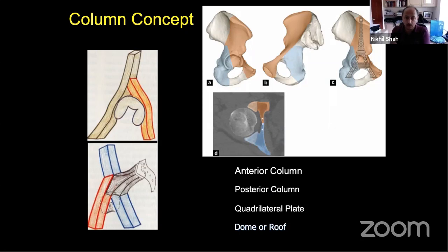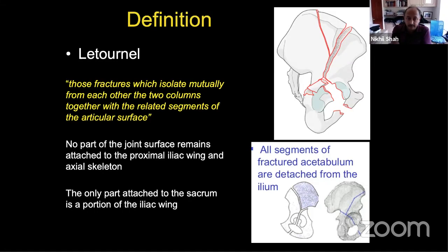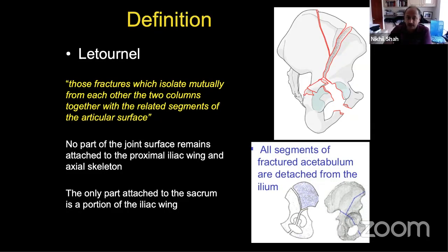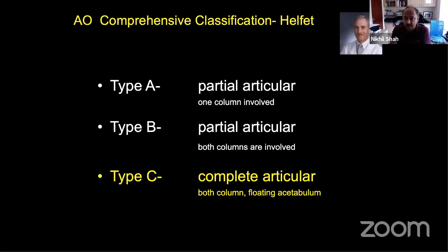Everyone is familiar with the column concept of the acetabulum — the anterior and posterior columns, shaped like an inverted Y — and the important structures such as the dome and the quadrilateral plate. Letournel defined an associated both column fracture as those fractures which isolate mutually from each other the two columns together with the related segments of the articular surface, meaning no part of the acetabulum is in continuity with the iliac wing. In the AO classification system, this is a complete articular type because you effectively have a floating acetabulum.